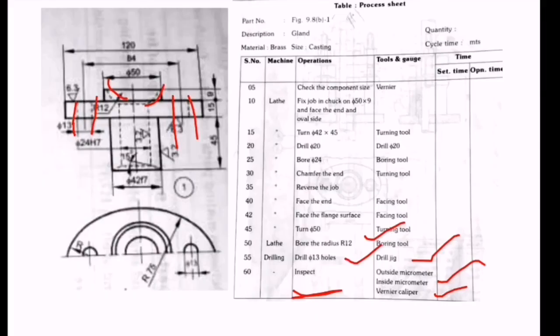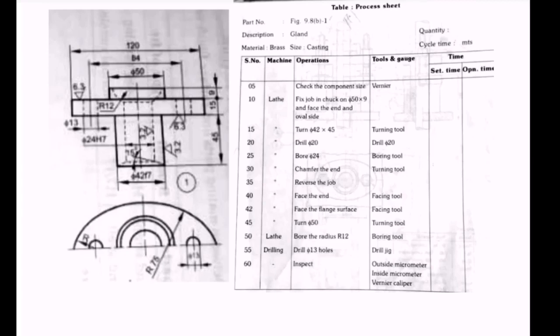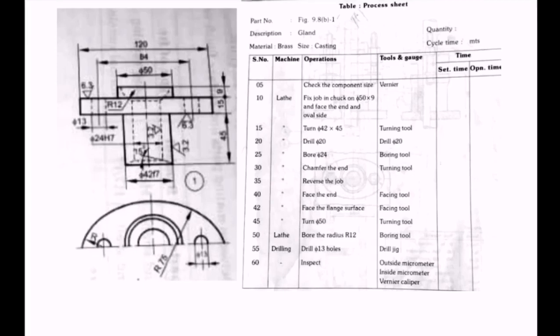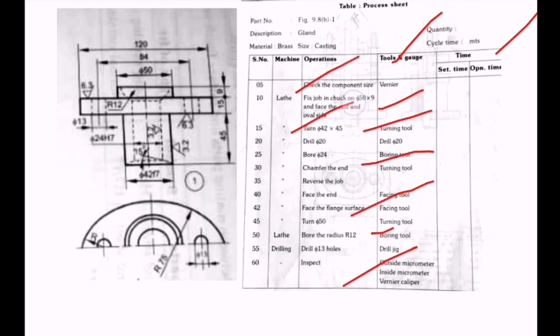This is the explanation of a process sheet. The process sheet illustrates a table with different columns: serial number, machine, operations, tools and gauges, and time required. It shows different operations in sequential manner, machines used, and tools and gauges used, providing clear information about the process.